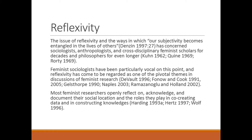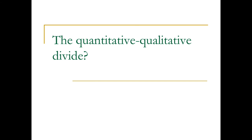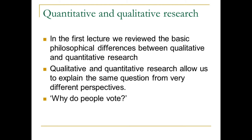So reflexivity in social research comes directly out of the feminist critique of the norms and values imported into the social sciences from the natural sciences — the lack of reflective critique of whether the social sciences were best served by the same attitudes and values toward research subjects as in the natural sciences. In the previous videos, we've been reviewing the basic philosophical differences between qualitative and quantitative research and a history of how both approaches came to be established within the social sciences. Qualitative and quantitative research allows us to explain the exact same questions, but from very different perspectives.